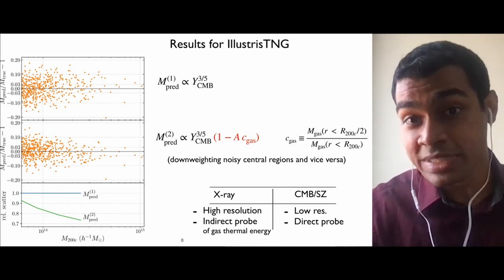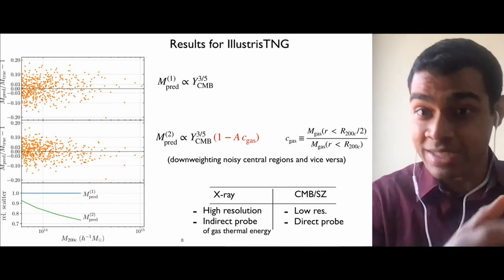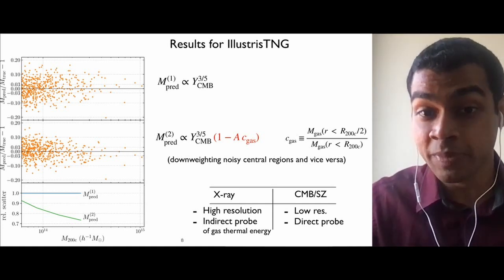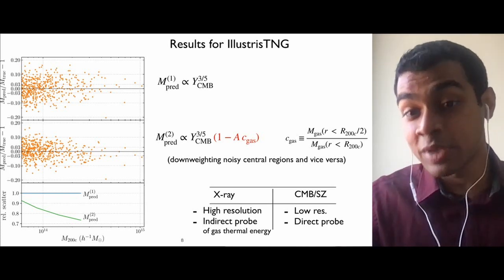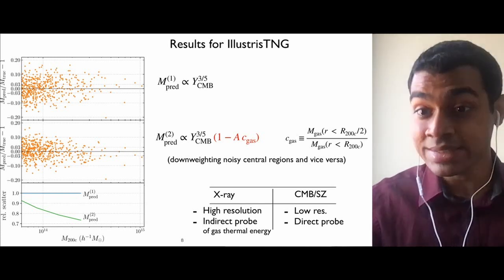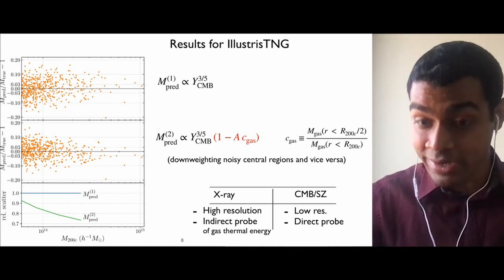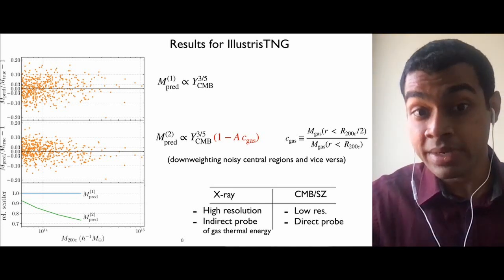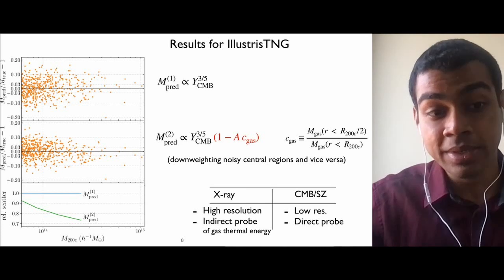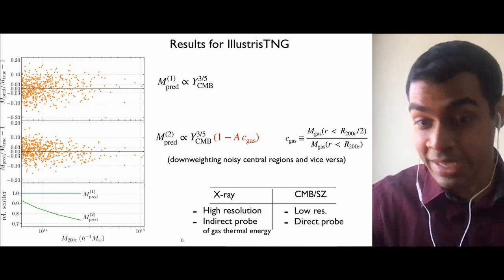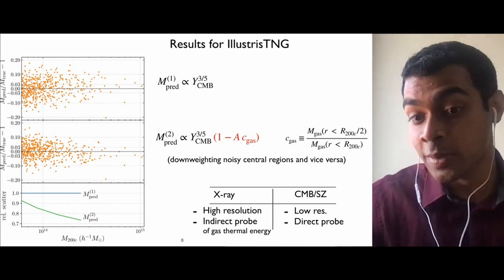So the first thing we tried to do is we did not use CAMELS. In the beginning, we tried to use the IllustrisTNG for the reason that you mentioned. CAMELS has a small volume. IllustrisTNG has a much larger volume with a large number of clusters. So then we applied symbolic regression on these dimensions that I mentioned, and we found actually that you can have a better prediction of mass if you combine this parameter from CMB surveys with a parameter that you can estimate from X-ray surveys, which has this form one minus a constant times the concentration of gas. So what this does is it effectively downweights the central regions of the clusters, which are more noisy and it upweights the outskirts of the clusters, which are less noisy.